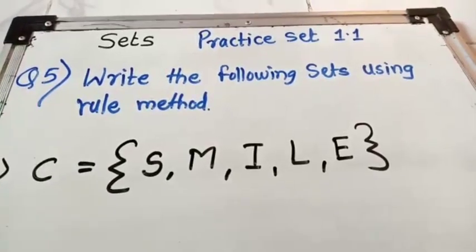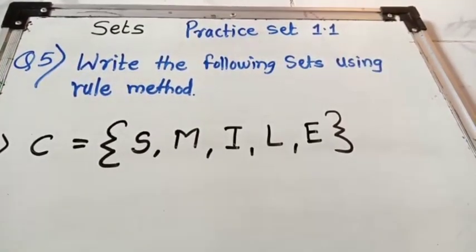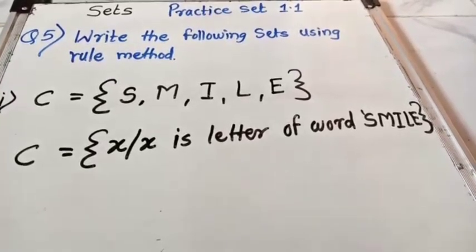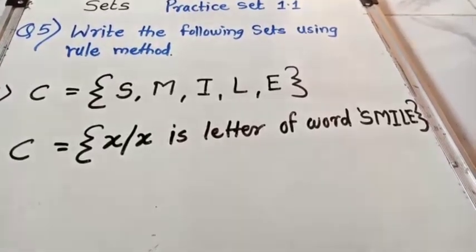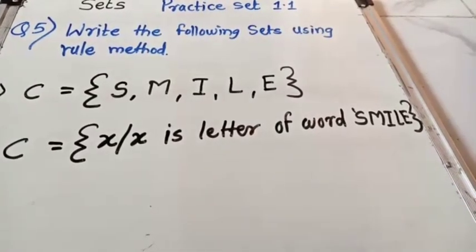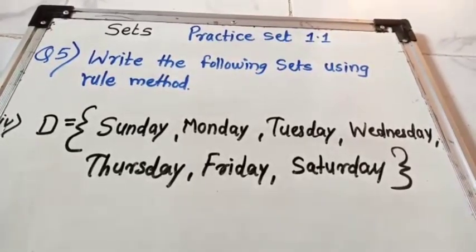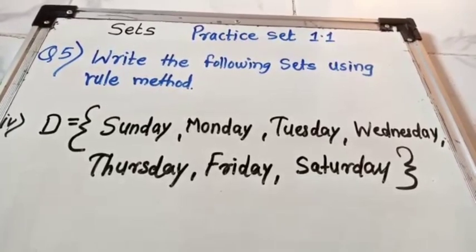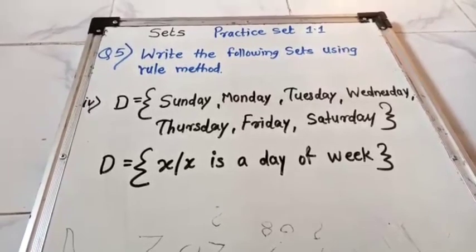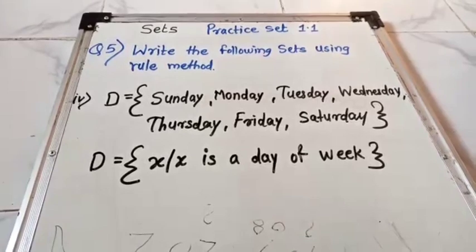Next example: C = {S, M, I, L, E} — the set of letters in the word 'smile.' In rule method: C = {x | x is a letter of the word 'smile'}. Next example: D = {Sunday, Monday, Tuesday, Wednesday, Thursday, Friday, Saturday} — days of the week. In rule method: D = {x | x is a day of the week}.